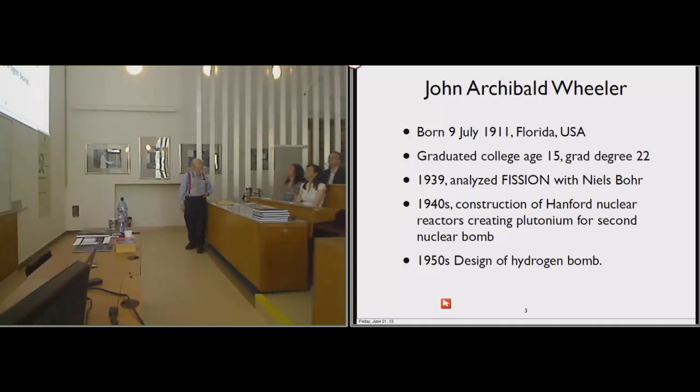This is John Wheeler, who has since died, and he and I produced the first edition of this book. He is a name you have perhaps heard of. He was born in 1911 in Florida. He graduated from college at age 15, and he got his doctoral degree at 22. Then he went to the Copenhagen Institute with Niels Bohr. In 1939, they analyzed fission that led to the first nuclear weapon. In the 1940s, he was involved in constructing the Hanford nuclear reactors, which created plutonium for the second nuclear bomb. In the 1950s, he was a very warlike person. He worked for the government and was in on the design of the hydrogen bomb.